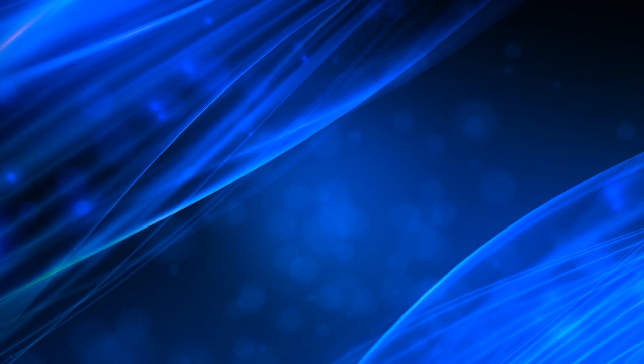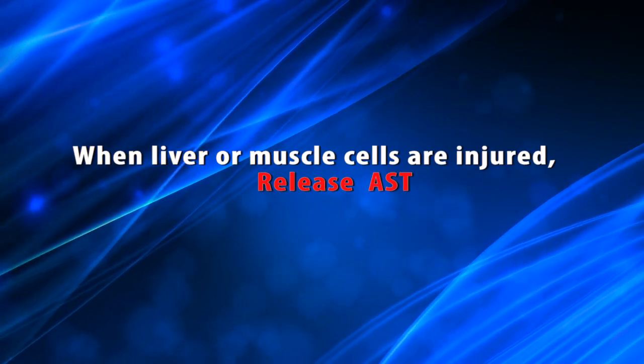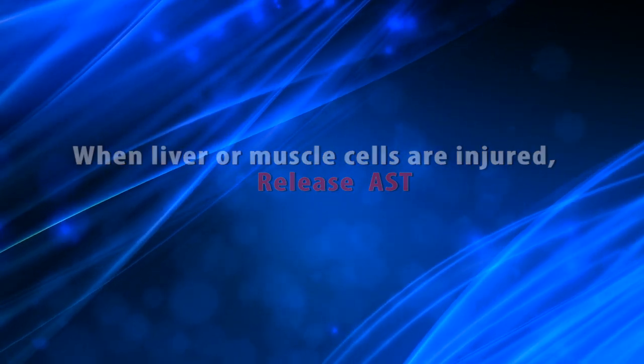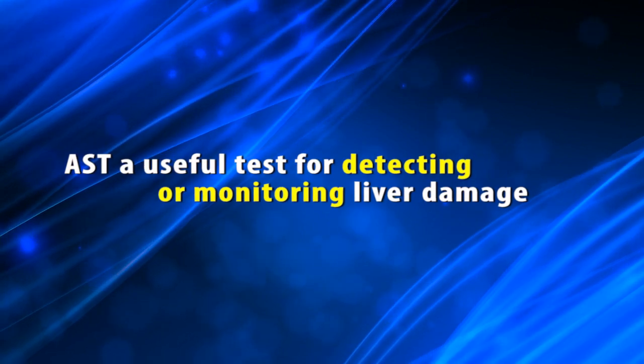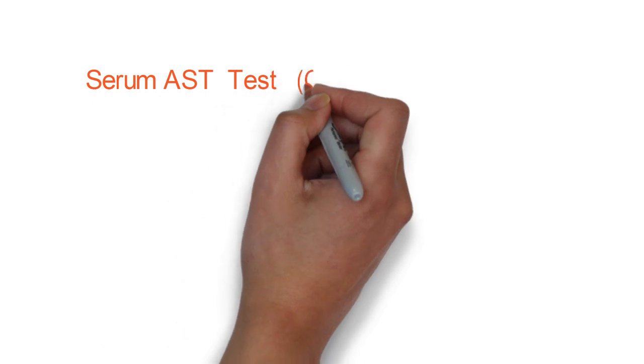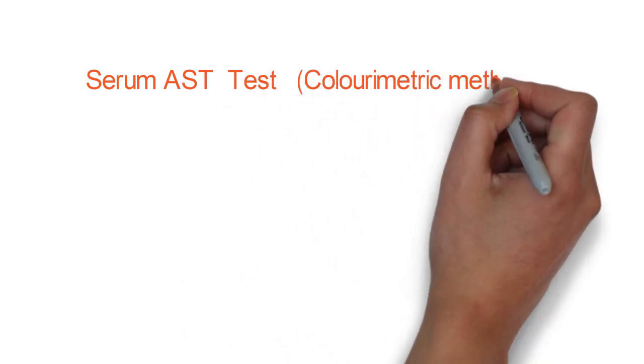When liver or muscle cells are injured, they release AST into the blood. This makes AST a useful test for detecting or monitoring liver damage. In this video, we are going to discuss the principle of AST measurement test.